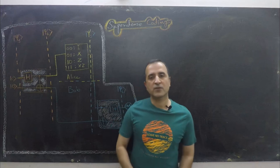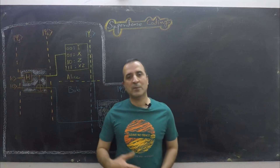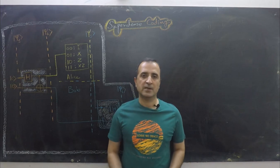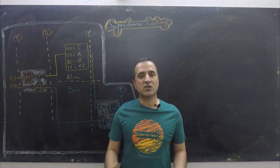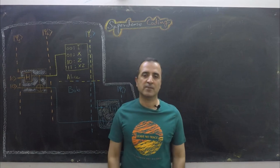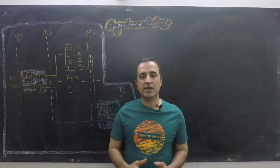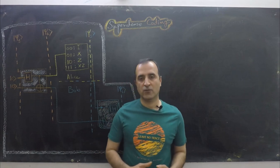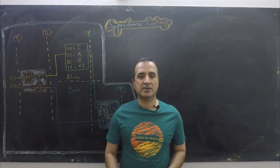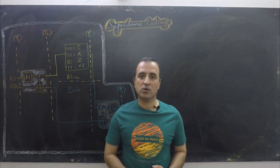In the last video we learned about the Bell states and entanglement. In this video we will do an application of entanglement known as super dense coding. In super dense coding we can send from one place to another two classical bits by sending a single quantum bit.